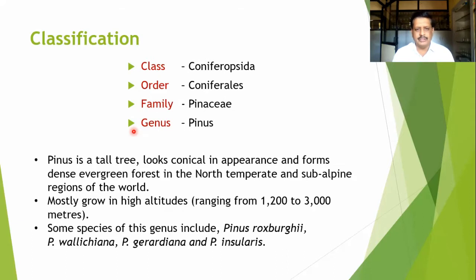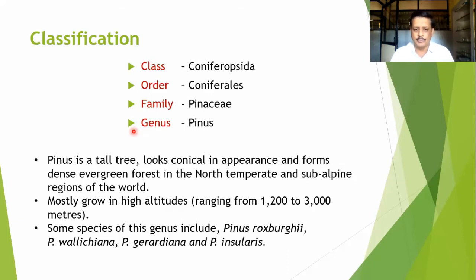Pinus mostly grows at high altitudes, normally ranging from 1000 to 3000 meters from mean sea level. Some of the species of this genus include Pinus Roxburghii, Pinus Wallichiana, Pinus Gerardiana, and Pinus Insularis. These are some of the common plants that belong to the genus Pinus.